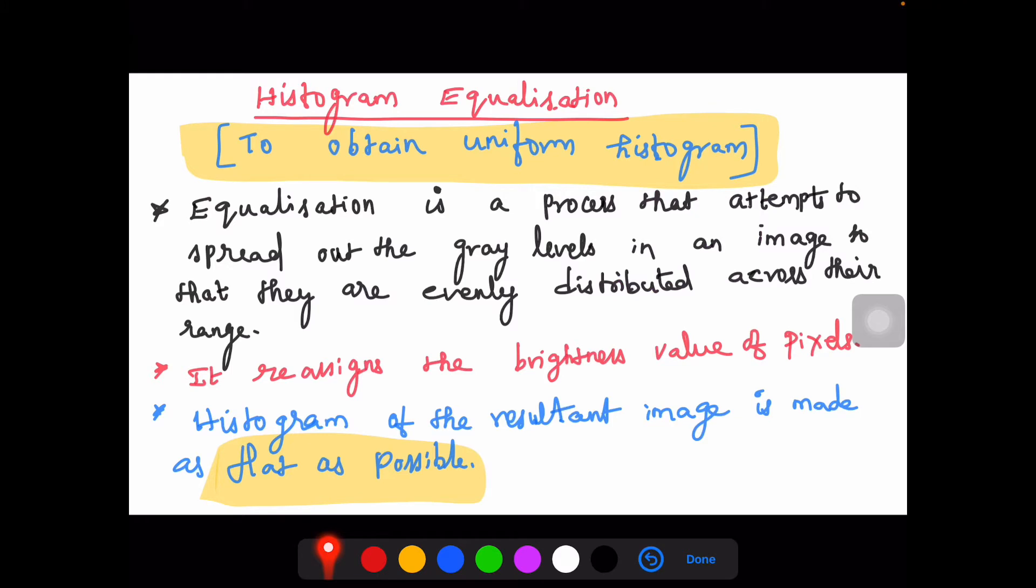What do you mean by histogram equalization? It is nothing but making the histogram uniform. Equalization is a process that attempts to spread out the gray levels in an image so that they are evenly distributed across their range.